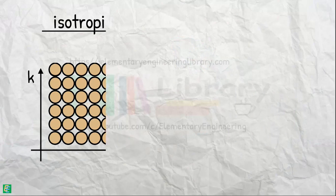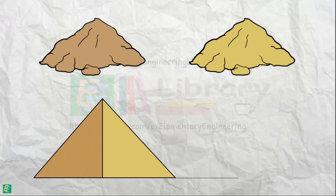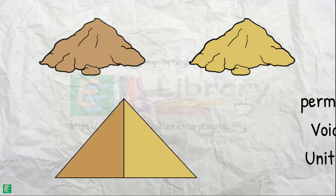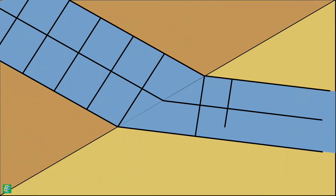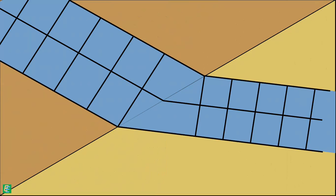Sometimes it becomes a necessity to use two different soils to make a soil structure. By two different soils we mean they have different properties like different permeability, different void ratio, different unit weights, etc. In such cases the permeability of the soil changes suddenly along the flow paths, and the flow lines and equipotential lines of the flow net get deflected at the junction point of the two soil masses. Consequently our flow net gets modified.